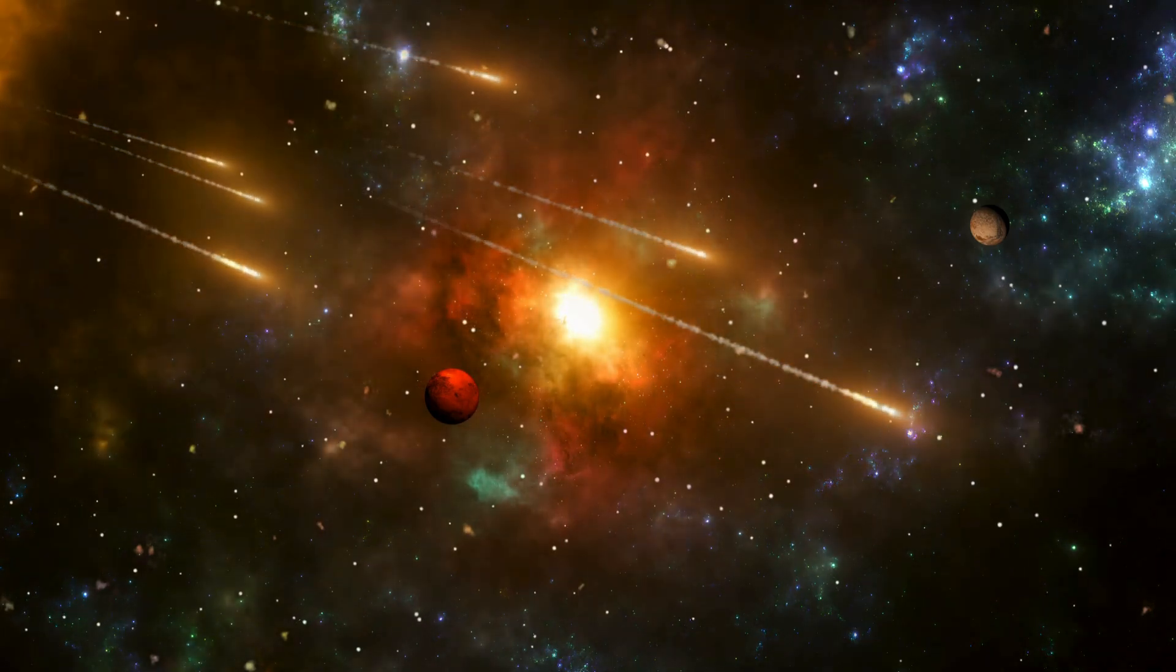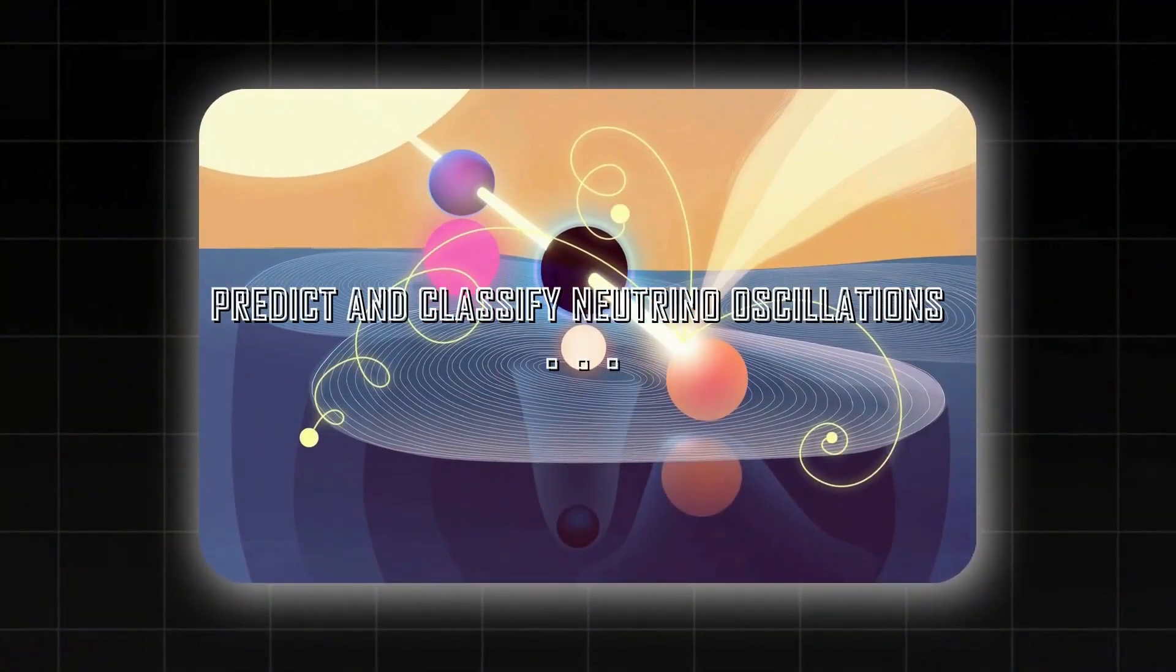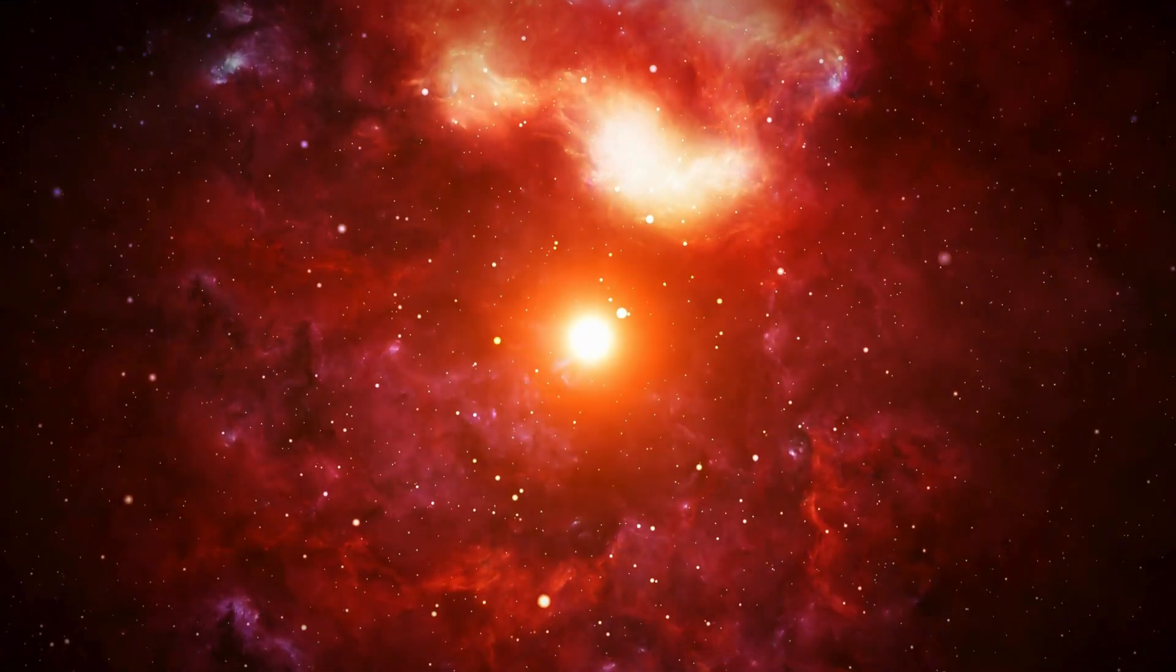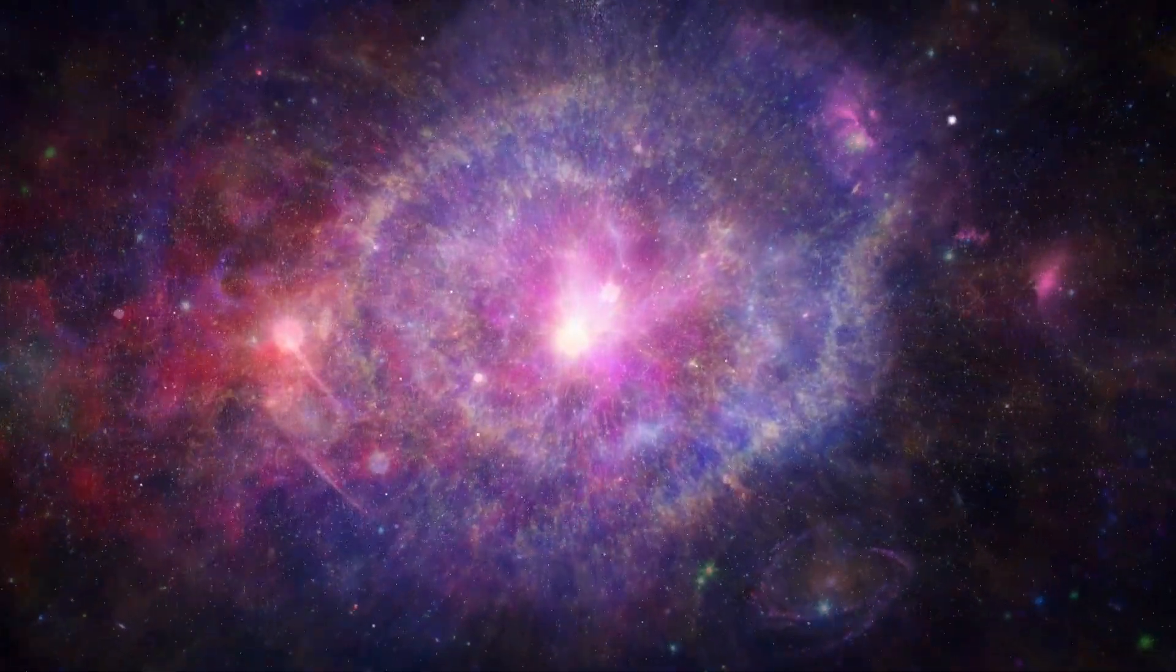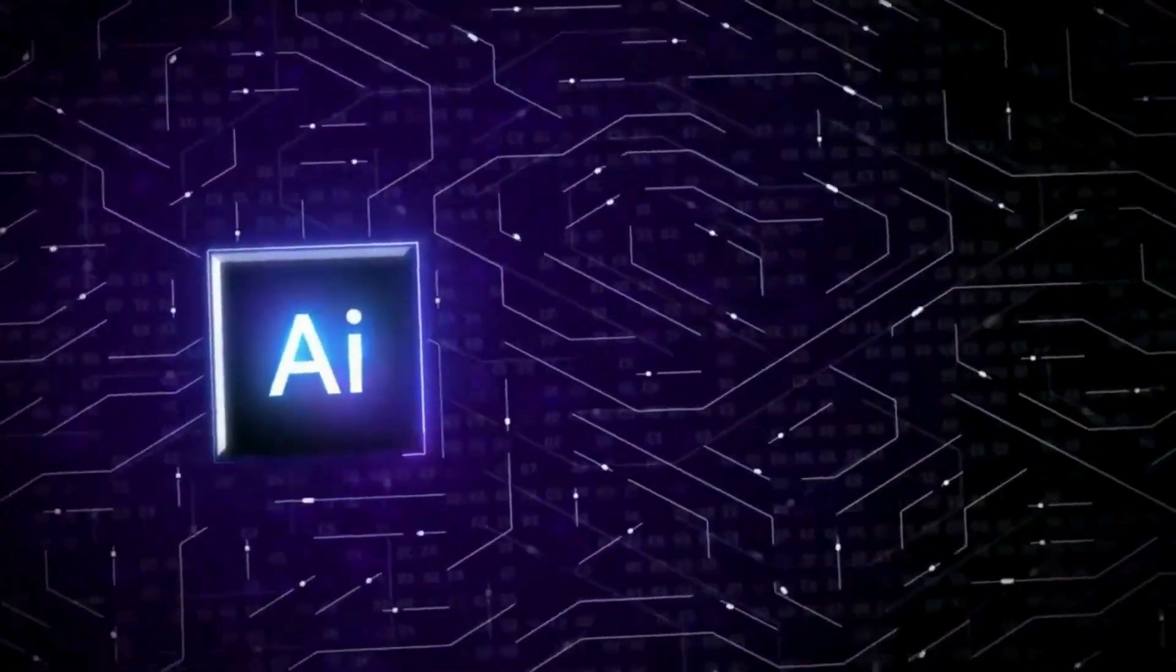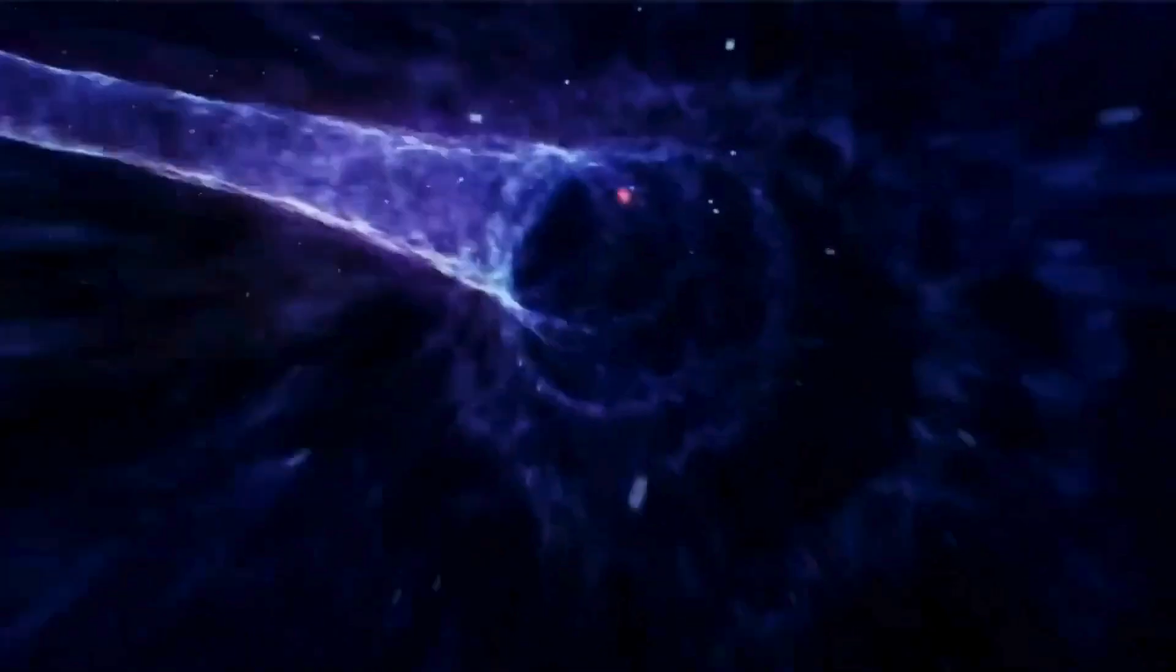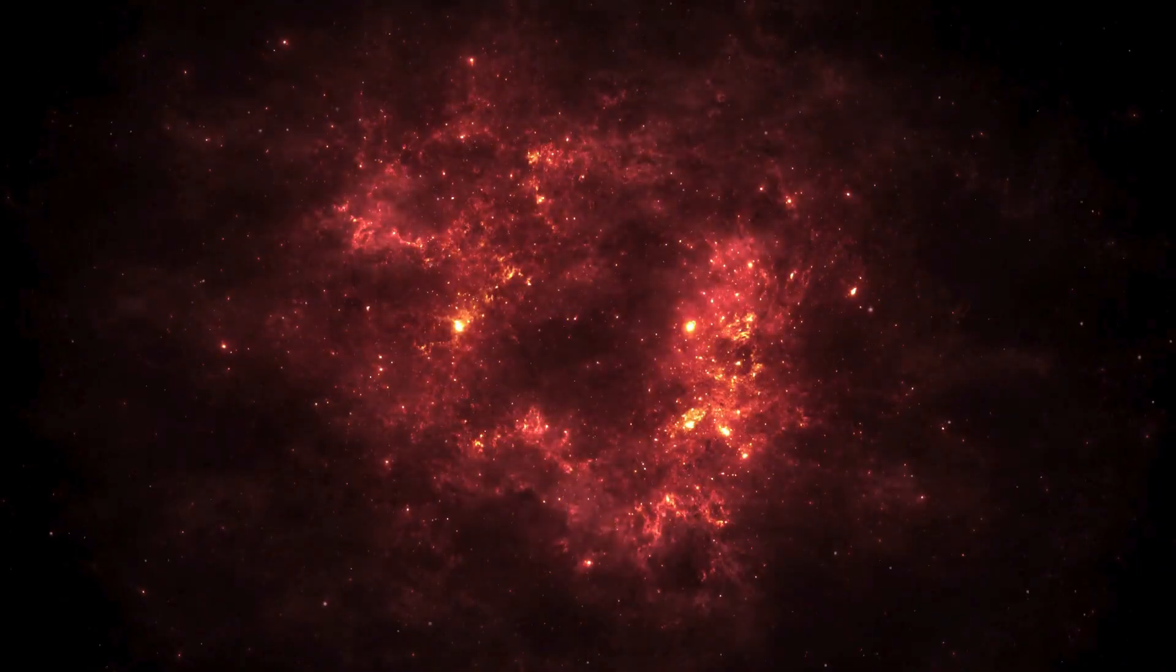their behavior doesn't fully align with our current models. In fact, some neutrino detections have shown anomalies that hint at the existence of an entirely new type of neutrino, one that doesn't interact via any known force except gravity. This hypothetical particle is known as the sterile neutrino, and if it exists it could change everything we think we know about the fundamental structure of the universe.